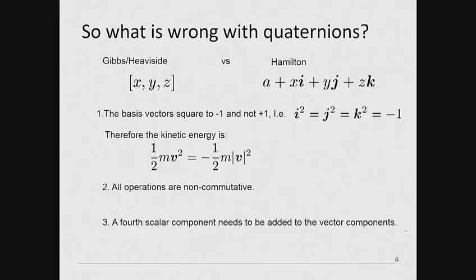So, what exactly is wrong with Quaternions? Why did Gibbs and Heaviside feel the need to completely rework the Quaternionic system of Hamilton? We can compare the three-component vectors developed by Gibbs with the four-component Quaternion of Hamilton.